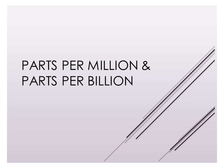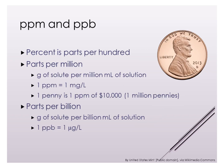A couple of other units we can use when talking about very small concentrations are parts per million or parts per billion. We can think about parts per million and parts per billion similarly to how we think about percentage. Remember that percentage is parts per 100. For parts per million and billion, we're not doing anything different — the number on the bottom just gets bigger.